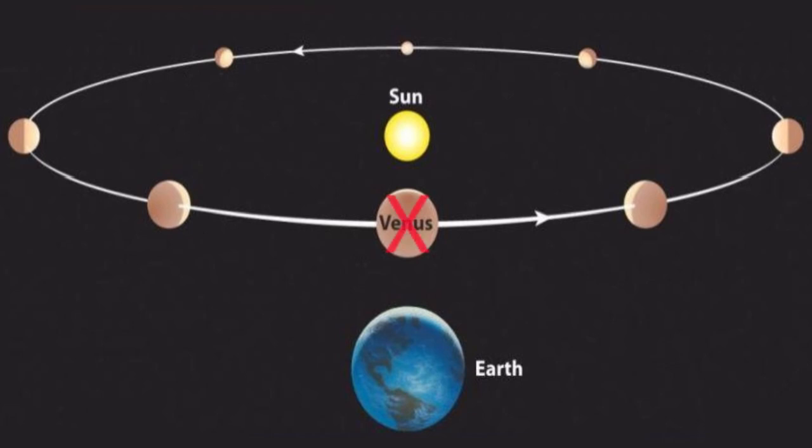In front of the sun, we can't see it. Behind the sun, we can't see it. When it is right or left of the sun, it will be an evening or morning star.